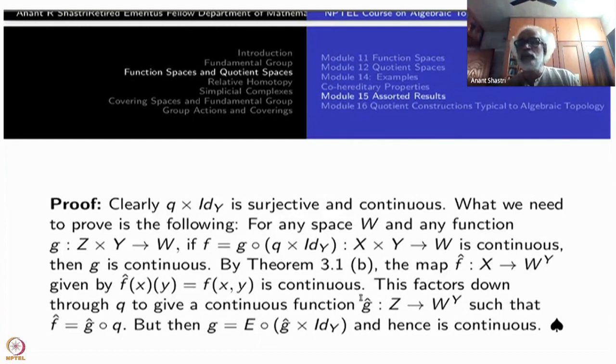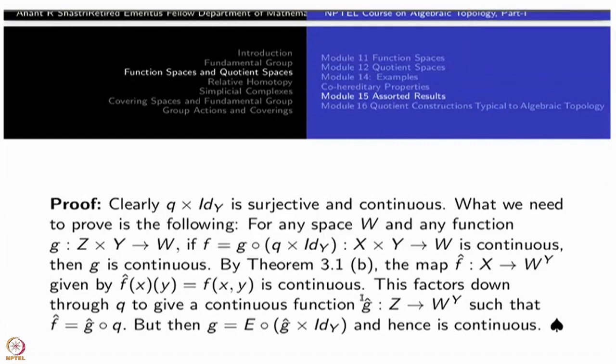You pass to the exponential correspondence, you pass to the function space. Use the function space argument, so this becomes such an easy thing. You can directly write down the proof, but then you will have to repeat the proofs of the exponential correspondence, etc. Or more or less, exactly same way you have to work out. Instead of doing that, you can use that one. That is a ready-made, ready-made result for you.